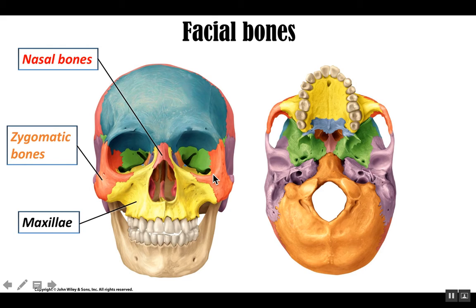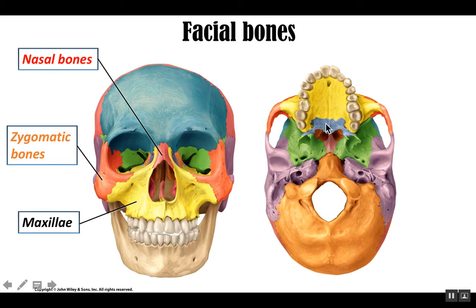The next two are known as maxillae, shown in yellow. These do articulate with one another, as well as forming articulations with other bones like nasal bones and zygomatic bones. They form what we call a portion of our hard palate. We can see that in the inferior view of the skull with the mandible removed, where the yellow portion formed by the maxillae is the anterior portion of the hard palate.